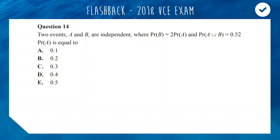This is actually quite a challenging question and if you're able to do this without flicking back to your Year 11 notes, you are smarter than me because that's what I had to do. I had to look up my union formulas and my independence. What's important to know is that the probability of A union B is found with this formula.